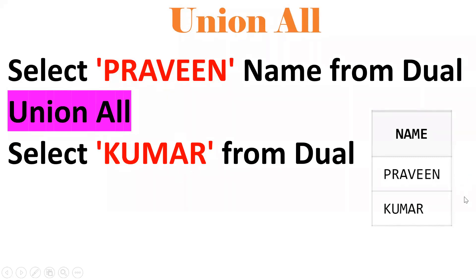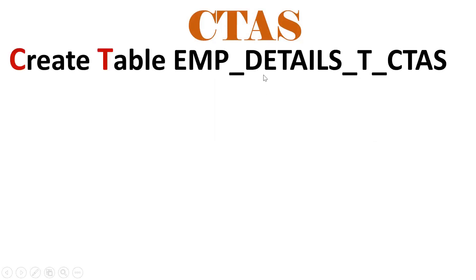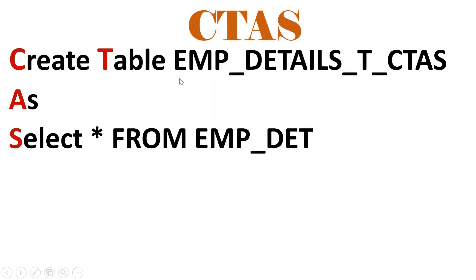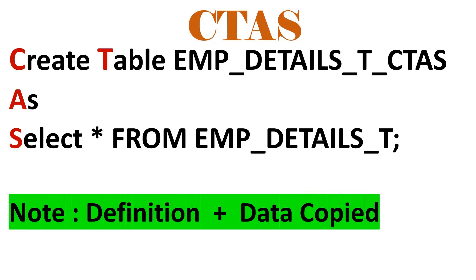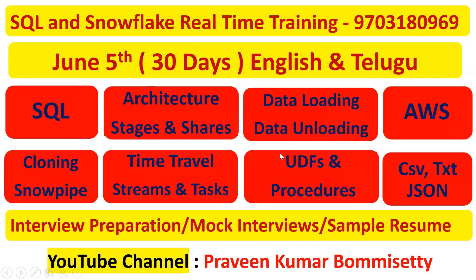If you want to do multiple table operations, go for JOINS. If you want to combine result sets, go for set operators. CTAS stands for Create Table As Select — syntax is: CREATE TABLE table_name AS SELECT * FROM source_table. This creates a backup table with both definition and data as a replica.